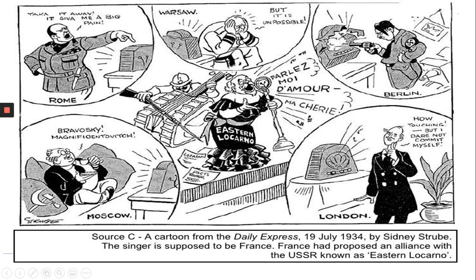So the first one we're going to have a look at is this one. The first thing we're going to do is look at the provenance — so where the source comes from. It's come from the Daily Express in 1934. The singer is supposed to be France, and France had proposed an alliance with the USSR, which is Russia. What we're looking at now is others' reaction to this idea of France and Russia making an agreement.